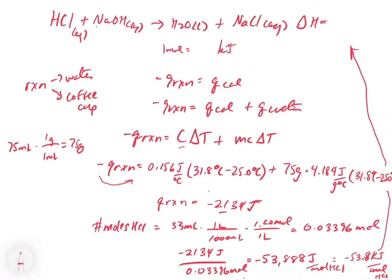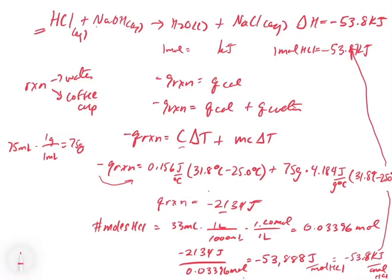Bringing this back to our balanced reaction, for every one mole of HCl, minus 53.8 kilojoules of energy is transferred. Since the stoichiometric coefficient is one, delta H for this reaction equals minus 53.8 kilojoules. That's how you set up different calorimeter problems — Type 3 in the first example, and Type 1 in the second. In the end, you get an energy value, then figure out delta H by dividing by the moles of a reactant and applying your knowledge of thermochemical equations.